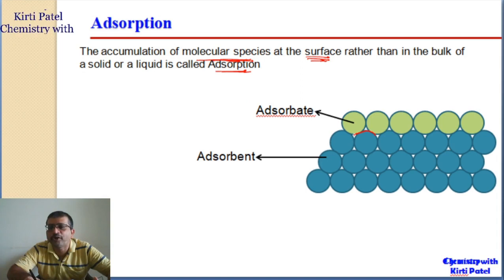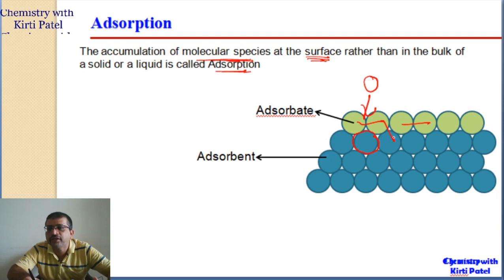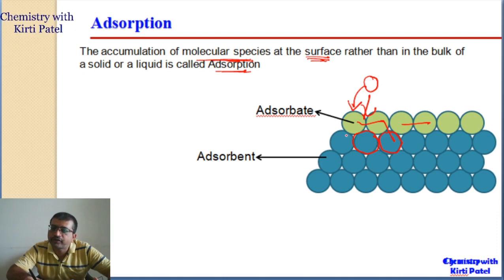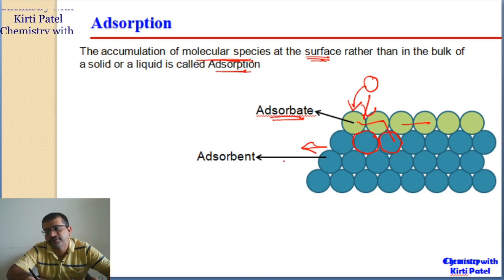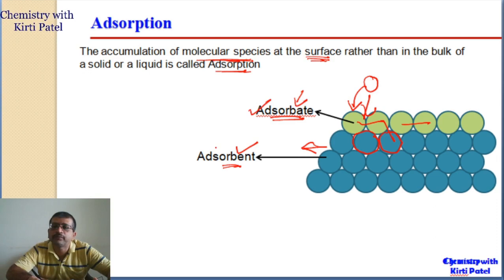The process of accumulation of molecular species on the surface of a solid or liquid is called adsorption. In the adsorption process, these surface molecules — due to asymmetric forces — try to capture the molecules just above the surface in the atmosphere, trapping them so that a second layer is formed. This second layer interacts with the surface molecules, reducing their energy. The molecules getting adsorbed onto the surface are called adsorbate, and the solid or liquid providing the surface is called the adsorbent.